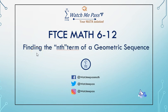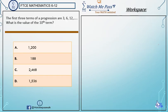Finding the nth term of a geometric sequence. The first three terms of a progression are 3, 6, 12 continuing on. What is the value of the 10th term?